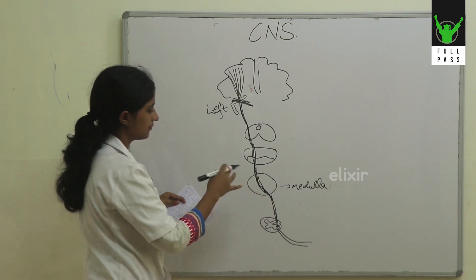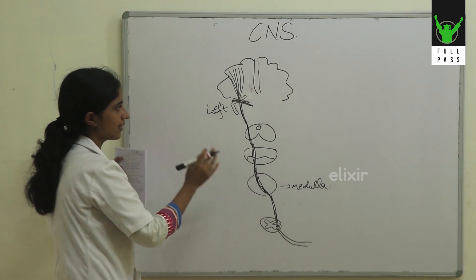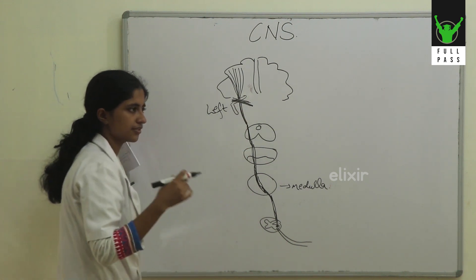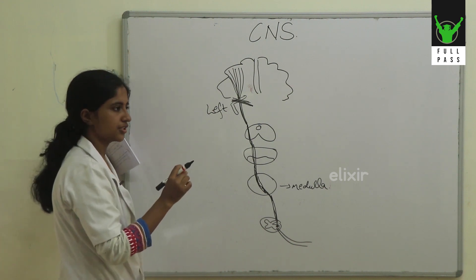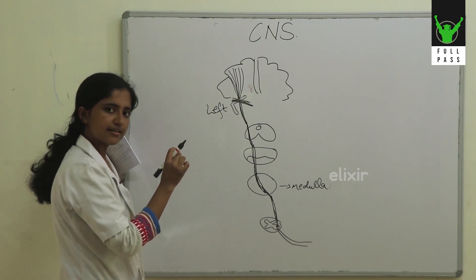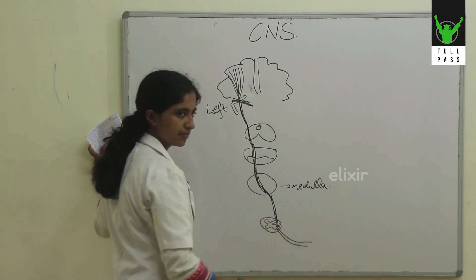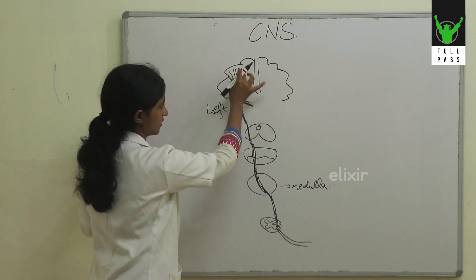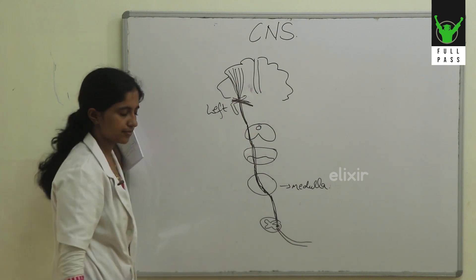That is why we get hemiplegia on the right side. It is very important to know the blood supply of internal capsule, because if any kind of thrombus formation or hemorrhage occurs here, it may lead to right hemiplegia because all these fibers are passing through this area of the brain.